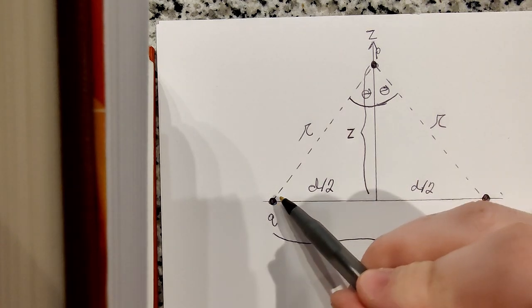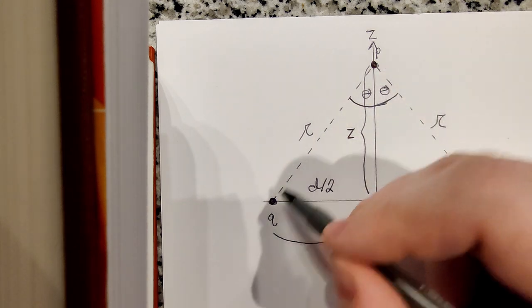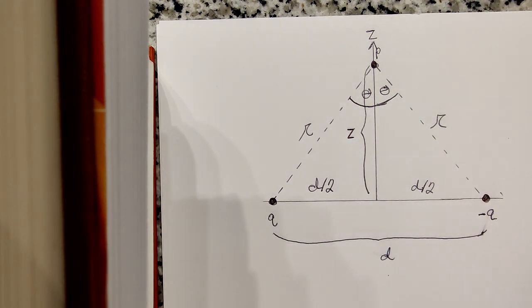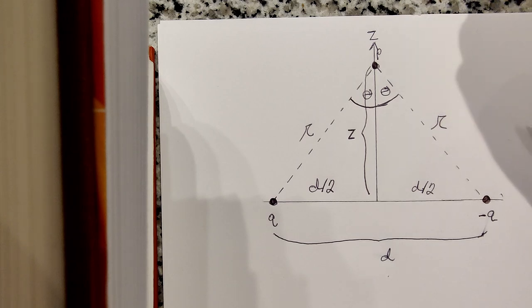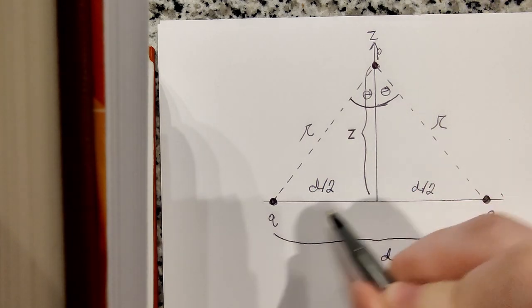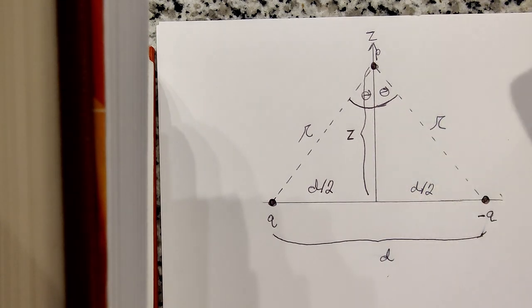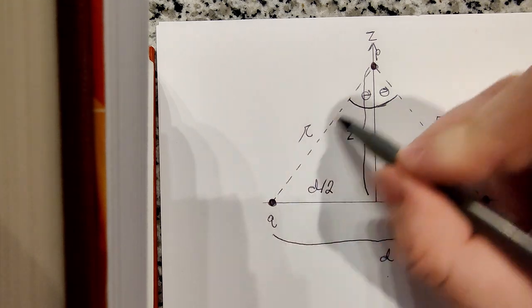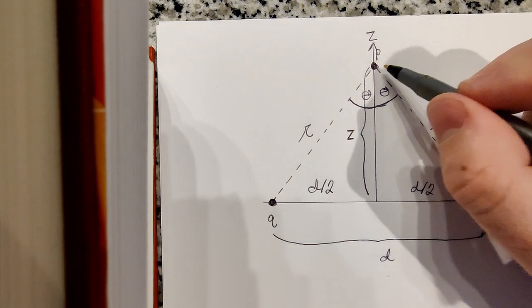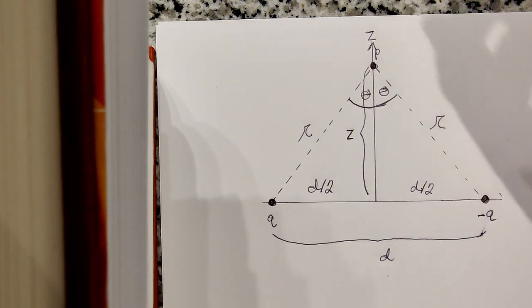And then I've also labeled here some things that will be important. The distance between each charge and the point that we're interested in finding the field at is labeled script r. And I've labeled the distance between our origin and each charge as d over 2, and the angle from the vertical to this line here connecting the charge to the point theta.